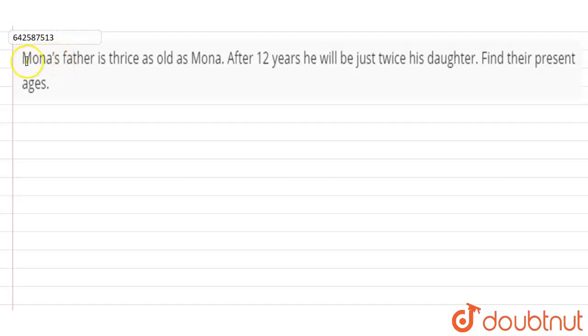So the question is: Mona's father is thrice as old as Mona. After 12 years he will be just twice his daughter. Find their present ages.